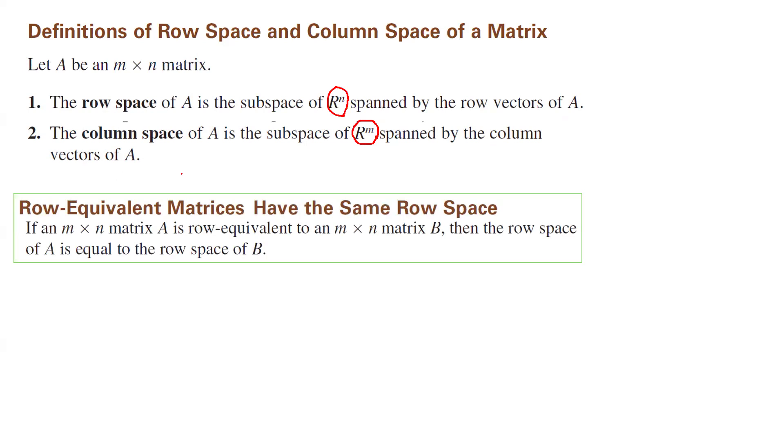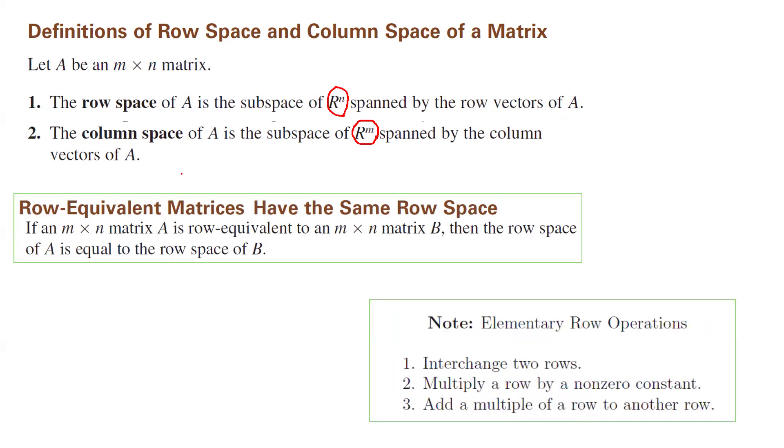Now, remember elementary row operations: interchanging two rows, multiply a row by a non-zero constant, and add a multiple of a row to another row.